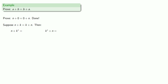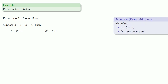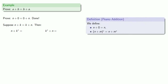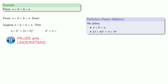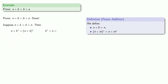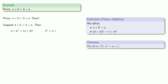By this point, you know the drill — definitions are the whole of mathematics, all else is commentary. And n plus k star, from our definition of addition, that's the same as the successor of n plus k. We proved earlier that the successor of n is the same as n plus one, so the successor of n plus k is n plus k plus one.